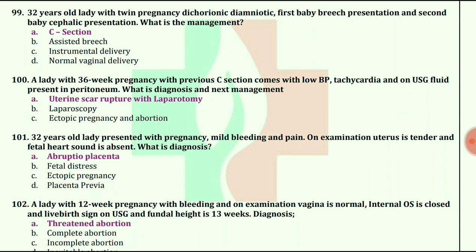32-year-old lady presented with pregnancy, mild bleeding and pain. On examination, uterus is tender and fetal heart sound is absent. What is the diagnosis? The answer is abruptio placentae.